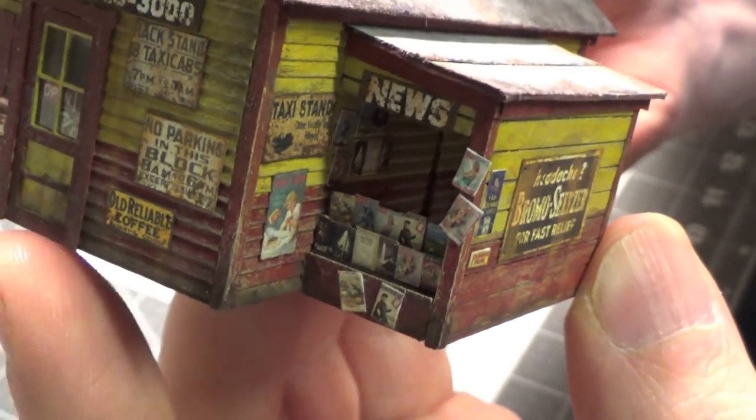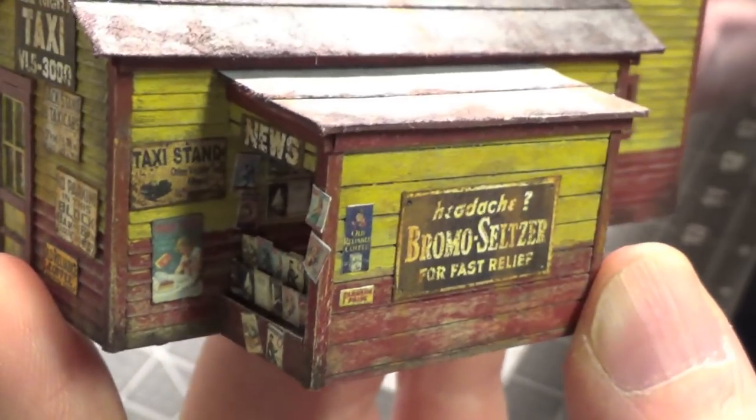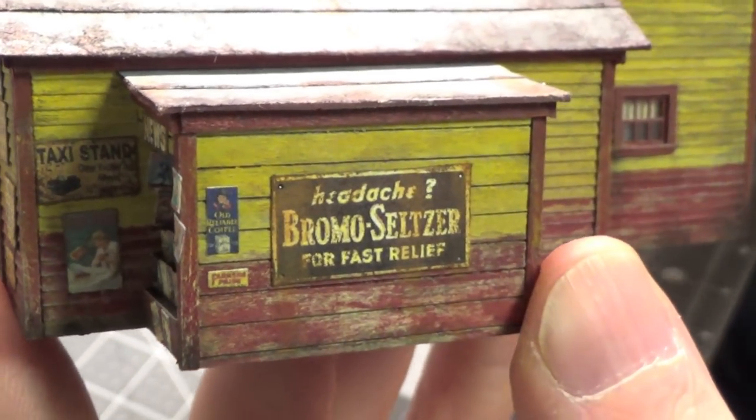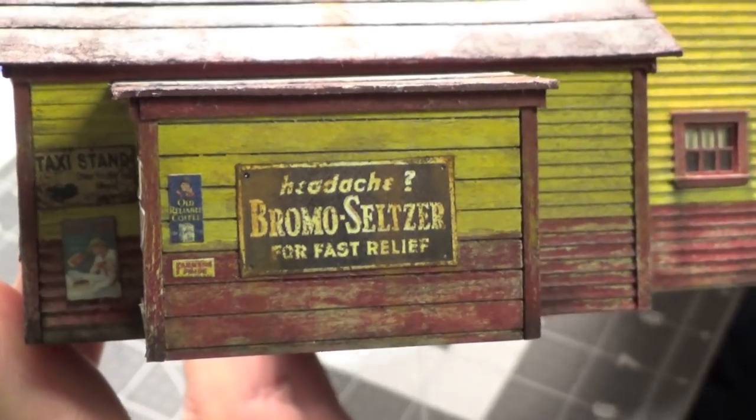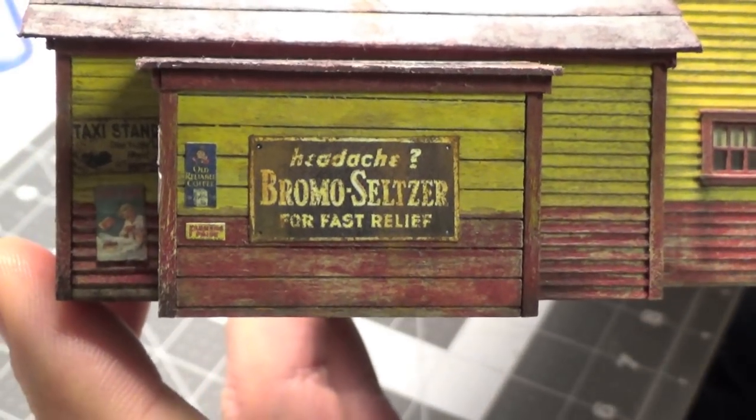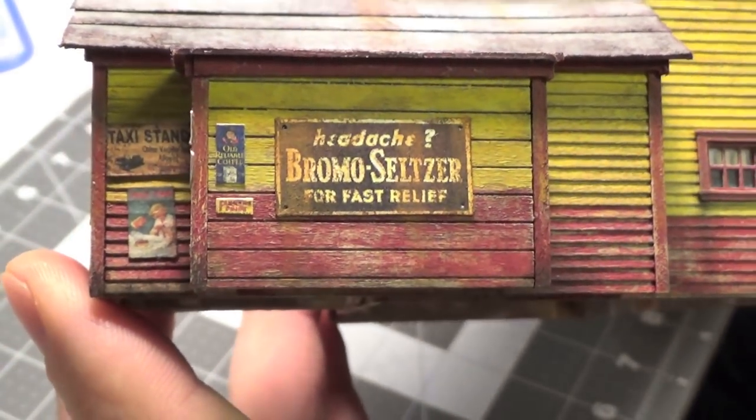All of the signs I wanted to look like metal. So what I did was I took a number two pencil and poked holes in the corners to represent nail holes.